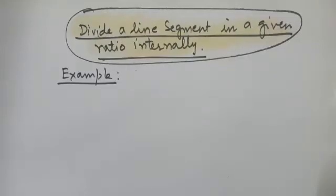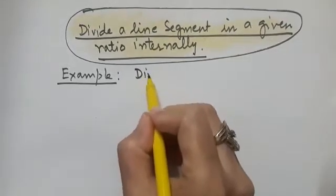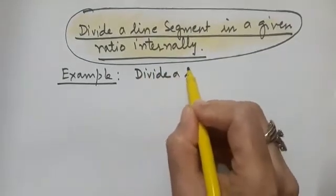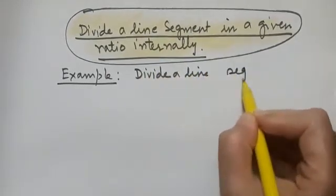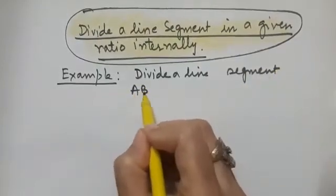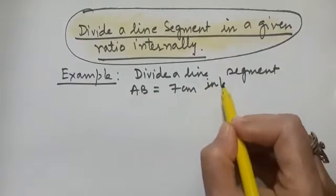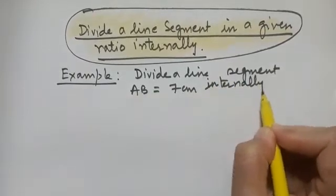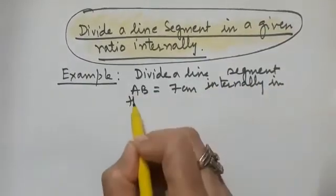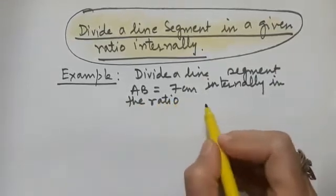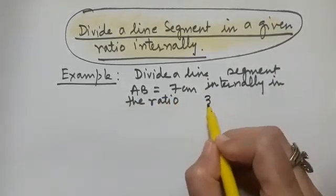Today we are going to learn how to divide a line segment in a given ratio internally. Let us understand this by the help of an example. We need to divide a line segment AB equal to 7 centimeters internally in the ratio 3 is to 2.